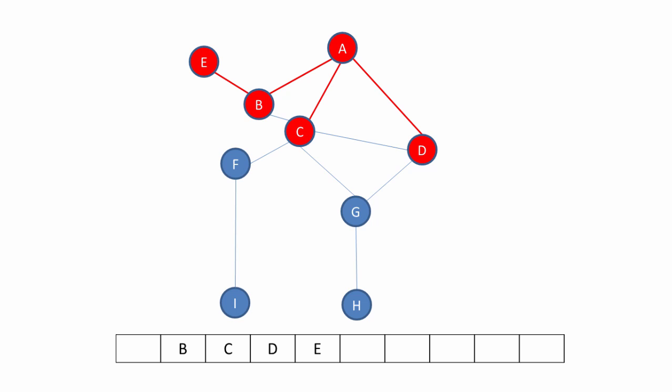Now that there are no more unvisited vertices adjacent to B, we dequeue B. And now C is the current vertex. Here we find F and G, which are visited and added to the queue. Now that we've exhausted all of the adjacent vertices next to C, we dequeue C. D is now at the front of the queue, but D has no adjacent unvisited vertices, so we dequeue D.